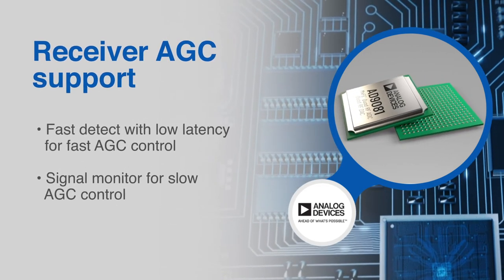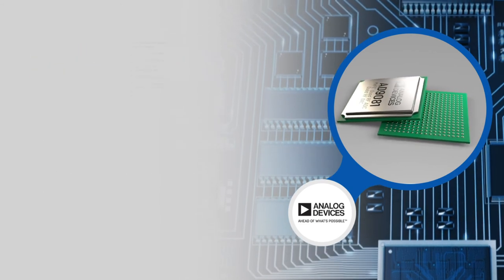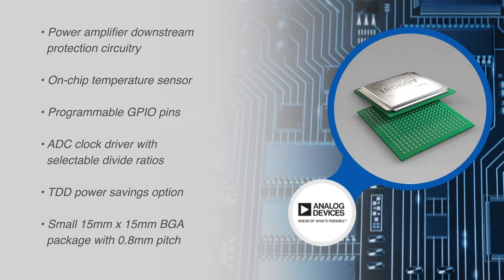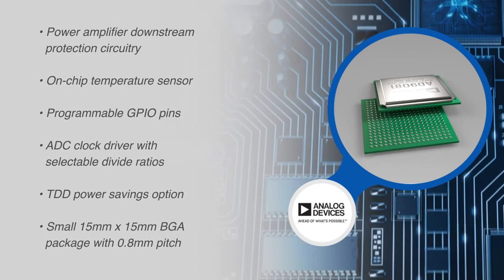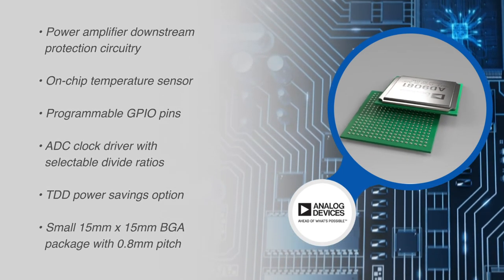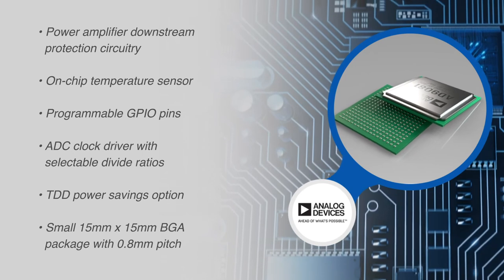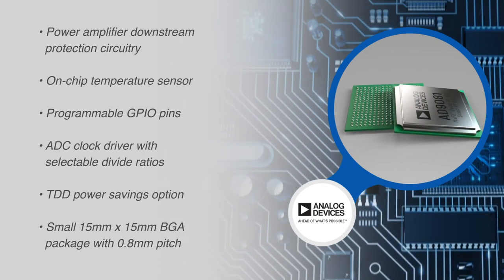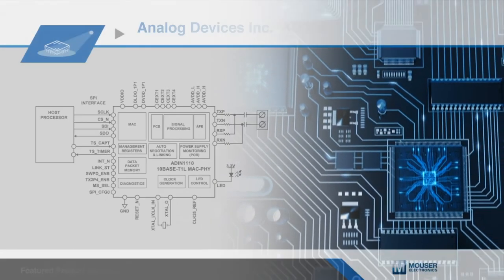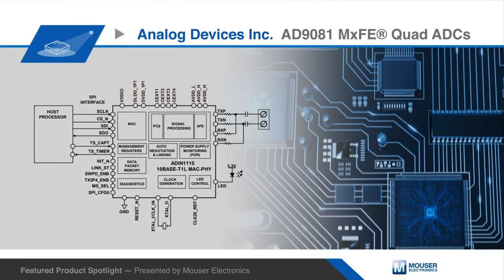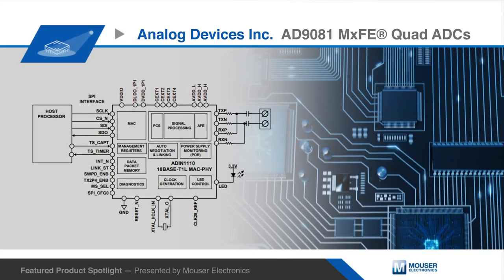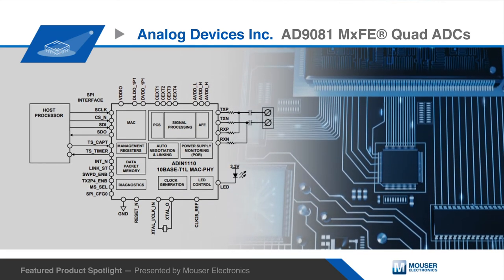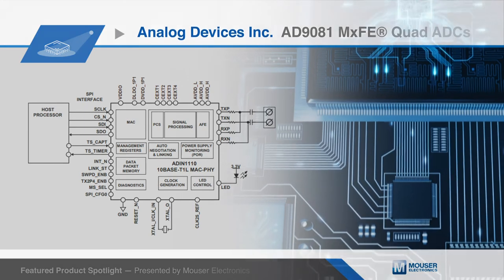Finally, the AD9081 includes power amplifier downstream protection circuitry, an on-chip temperature sensor, programmable GPIO pins, an ADC clock driver, a TDD power savings option, and comes in a small 15 by 15 millimeter BGA package with a 0.8 millimeter pitch. With a target dissipation between 6 and 7 watts, there is a nearly 10-fold reduction in power dissipation when compared to architectures that use the system FPGA for RF conversion and filtering.